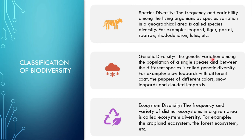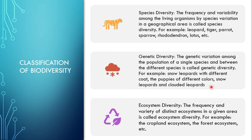Genetic diversity means genetic variation — variation in the genes. Genetic variation among the population of a single species and between different species is called genetic diversity. Sometimes within the same species there can be differences. For example, poppies of different colors — within the dog species there can be different colors of dogs. Snow leopards and clouded leopards are from the same leopard species but differ in color and characters. A very basic example is human species — we are all human but every human being differs in skin color, body structure, and other features.